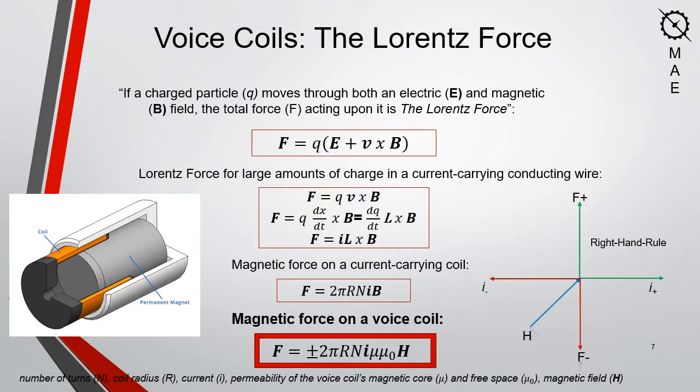The voice coil works via the Lorentz force, which states that if a charged particle moves through both an electric and magnetic field, the total force acting upon it is the Lorentz force, mathematically defined as the charge times the electric field plus the velocity crossed with the magnetic field. The Lorentz force for a current-carrying conducting wire with large amounts of charge can be extended to determine the magnetic force on the voice coil itself. You can see on the right that the direction of the force is determined from the right-hand rule.